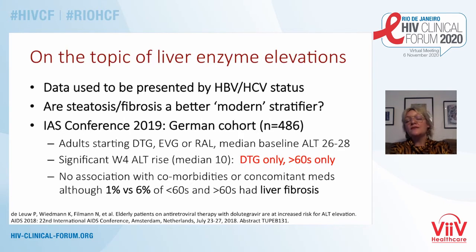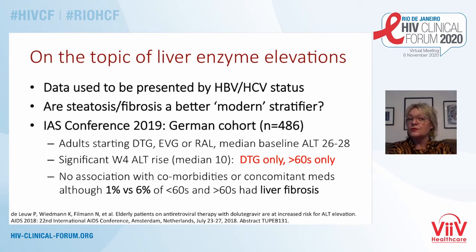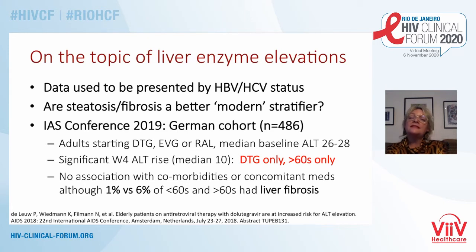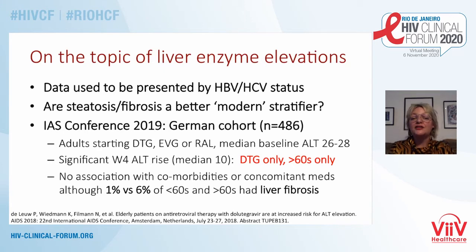On the topic of liver enzyme elevations, when they are included as an endpoint in clinical trials, we often see the risk stratified by hepatitis B or C co-infection status. I wonder now whether thinking about steatosis or fibrosis as a stratifier would be more meaningful. There is data from the IAS conference last year from a German cohort looking at people starting integrases and the risk of ALT elevation — and there was an association with liver fibrosis.